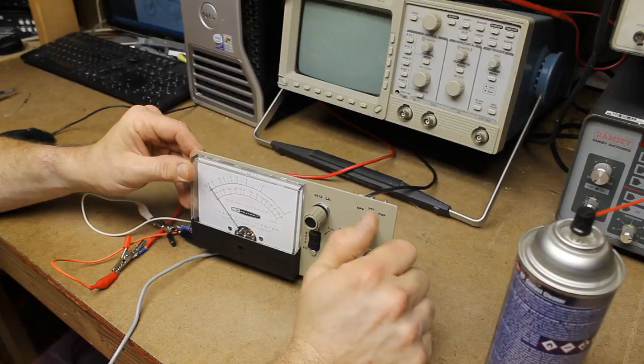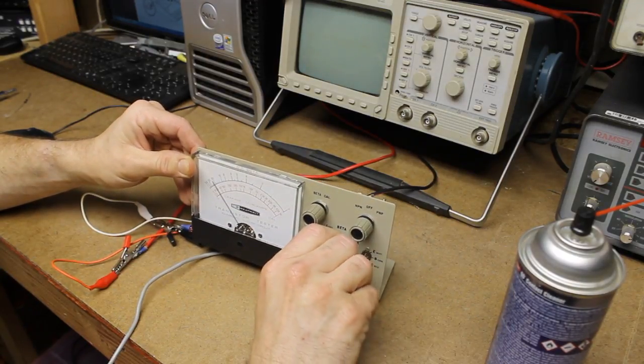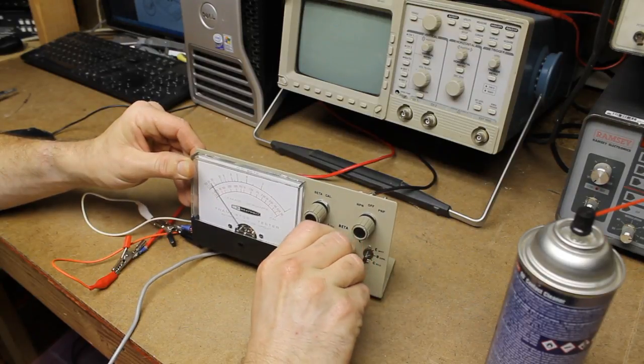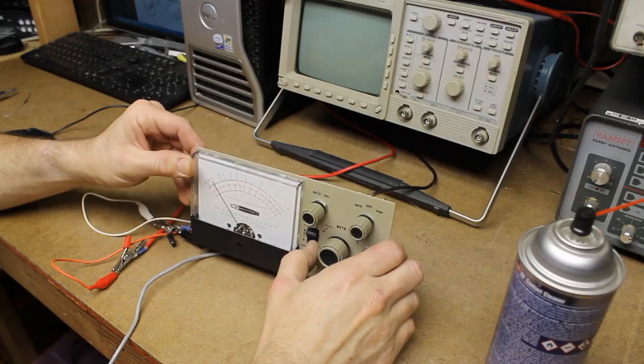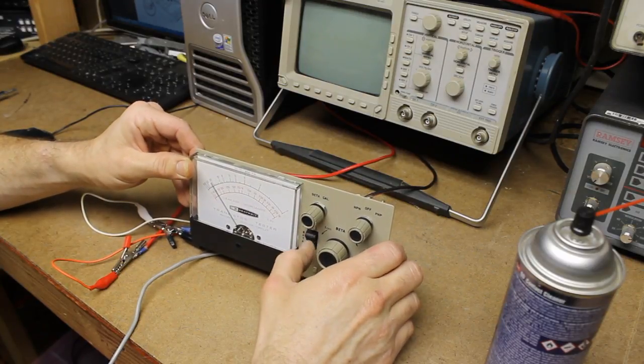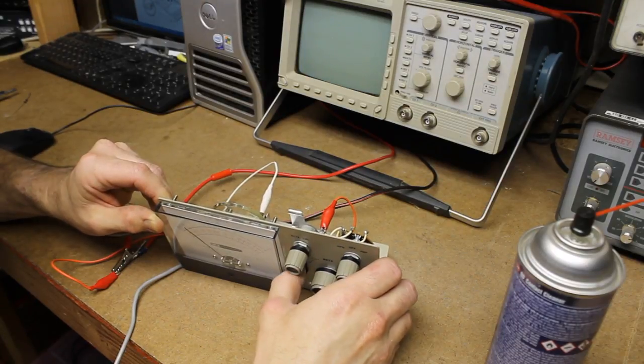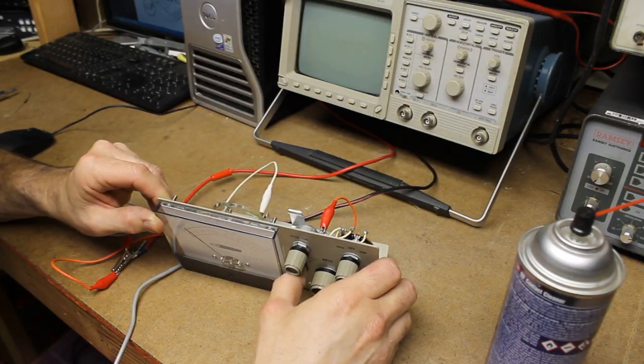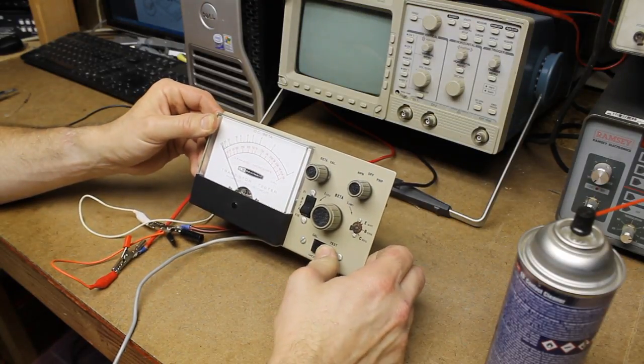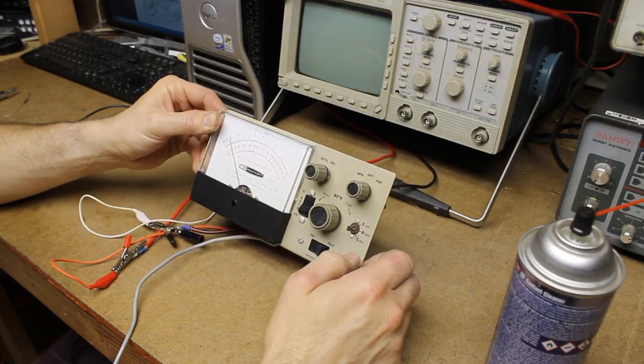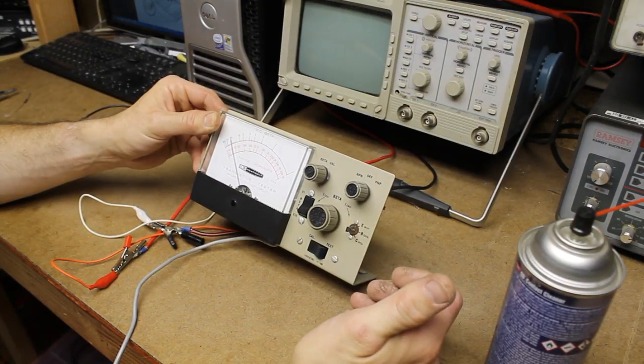We switch to PNP, we do have meter deflection. That switch may not be working correctly. Well, I can see it sliding, there's just not much resistance there. We may have to spray that down. For a beginning it looks like it is working.